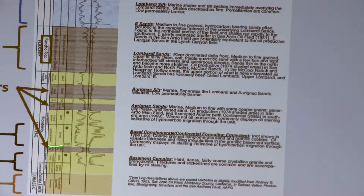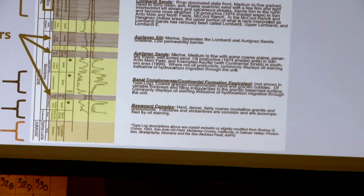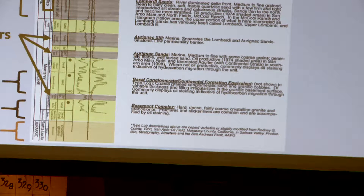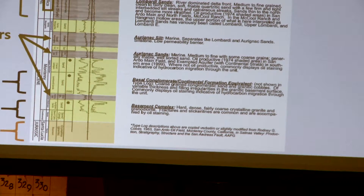Beneath that is yet another low permeability layer, and then we get into the Aranac sands, which is the second zone relevant to this aquifer exemption application. At the bottom of the Aranac sands, there's a basal conglomerate — a collection of gravel and sand that sits at the base of the Aranac. For the purposes of this aquifer exemption application, that basal conglomerate is rolled in with the Aranac, so you may see that in certain slides or documents pertaining to this.